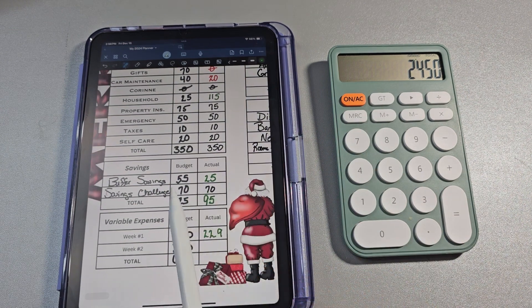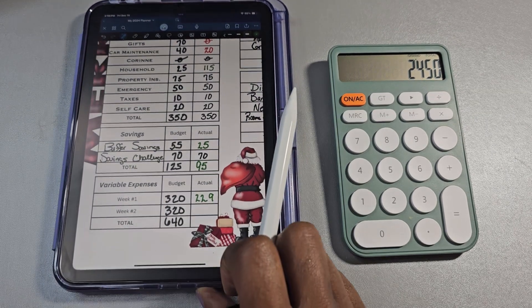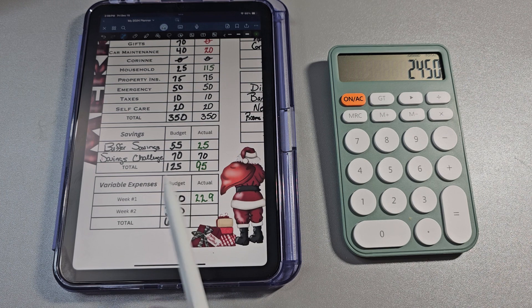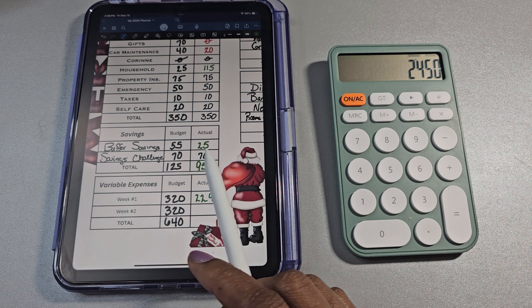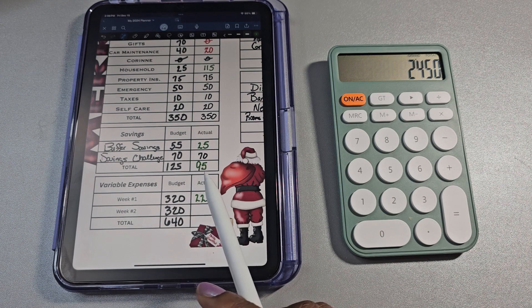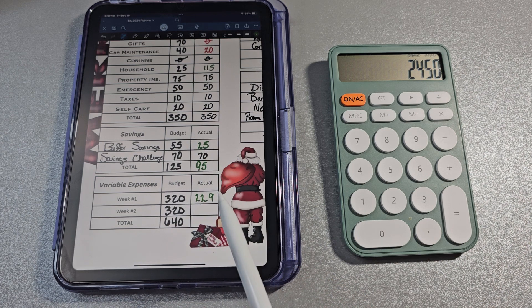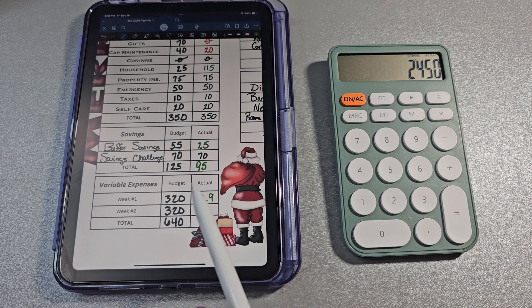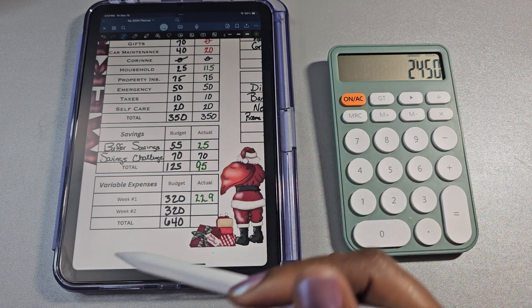So for the buffer savings, I was supposed to put 55 aside and I did 25 instead. Savings challenges came in right as I expected it to, and then that totals $95 instead of 125. I went in and colored that green since I did have less going towards the savings than I anticipated. There have been some times myself that I would color it red because I really wanted to save more and I felt bad because I didn't. But this time it's green because I am using some of these funds to help offset the cost as far as Christmas is concerned.